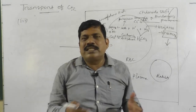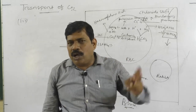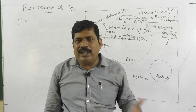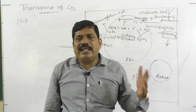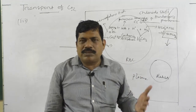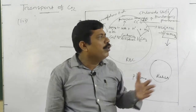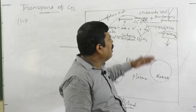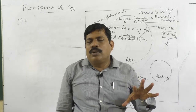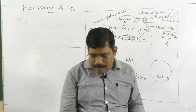To summarize: How is oxygen transported? In two forms — dissolved state (3%) and as oxyhemoglobin (97%). How is carbon dioxide transported? In three forms — dissolved state (7%), as carbamino compound (23%), and as bicarbonate ion (70%). We will continue at the next class.